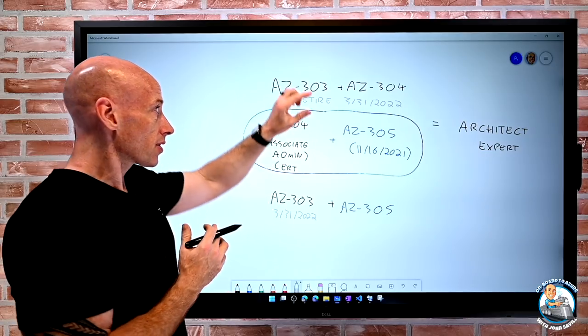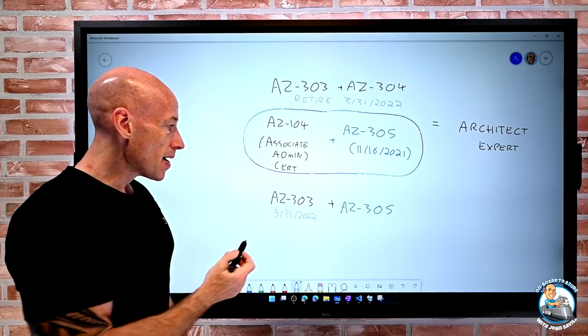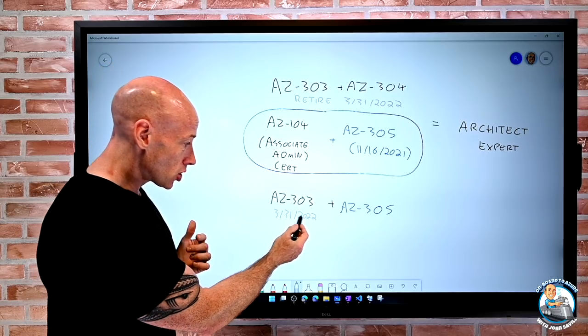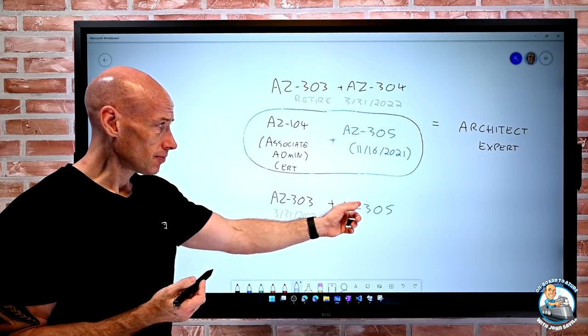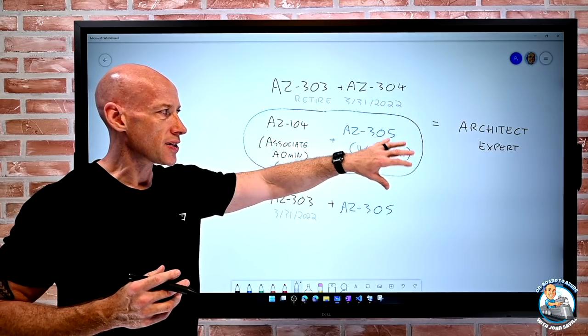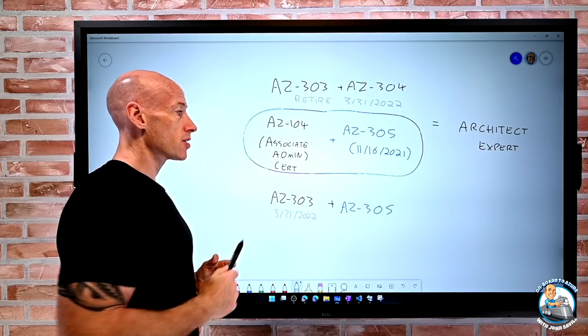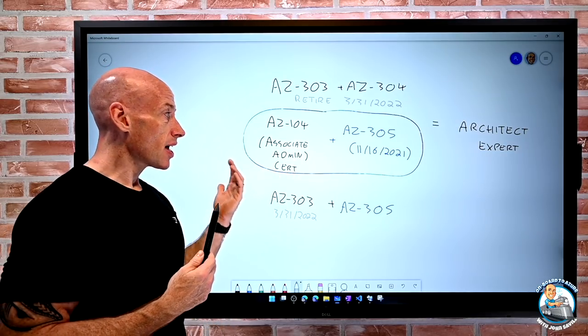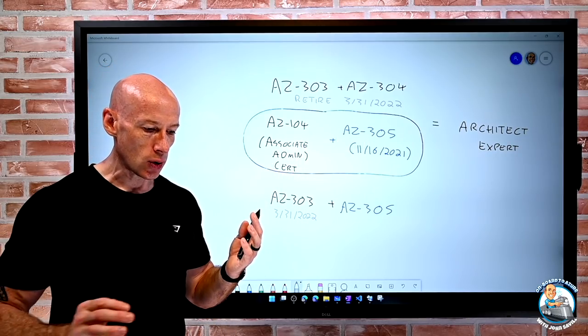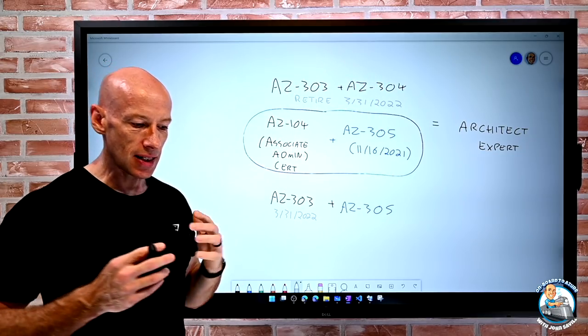If I'm currently on the path of doing the 303 and the 304, great, carry on, you have until the end of March to do that. If maybe I've taken a 303 already or I'm planning to take it, great, again just do that before the 31st of March and then take AZ-305 when it becomes available. So those are my new paths to get to Architect Expert. I like this because there was a lot of overlap between it. So now, hey, go and get your Associate Admin certification and then take one more exam and get your Architect Expert certification. So you have those three paths to basically get to the Azure Architect Expert. Two of them involving 305 or one can kind of stay on that current path until it retires.